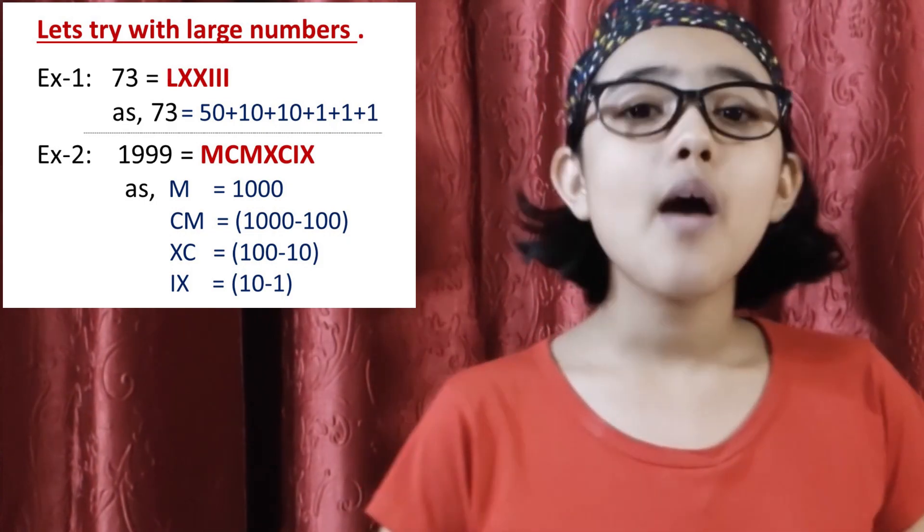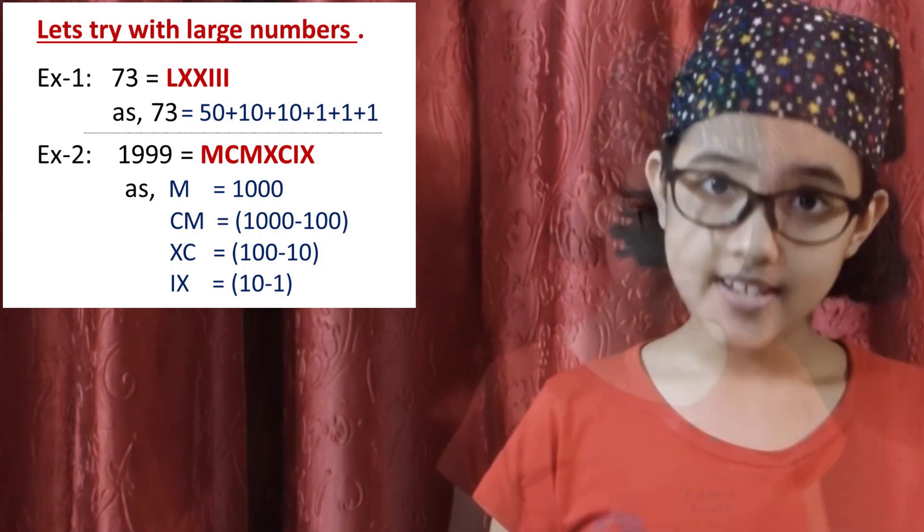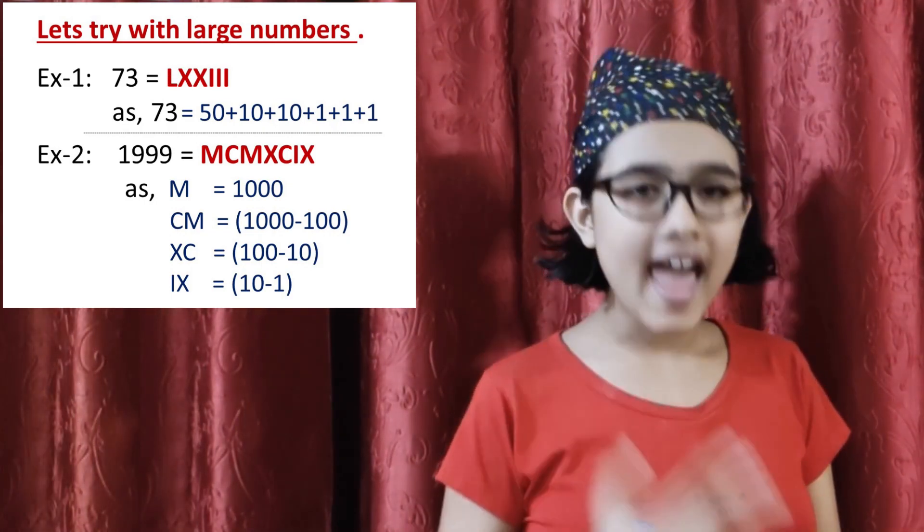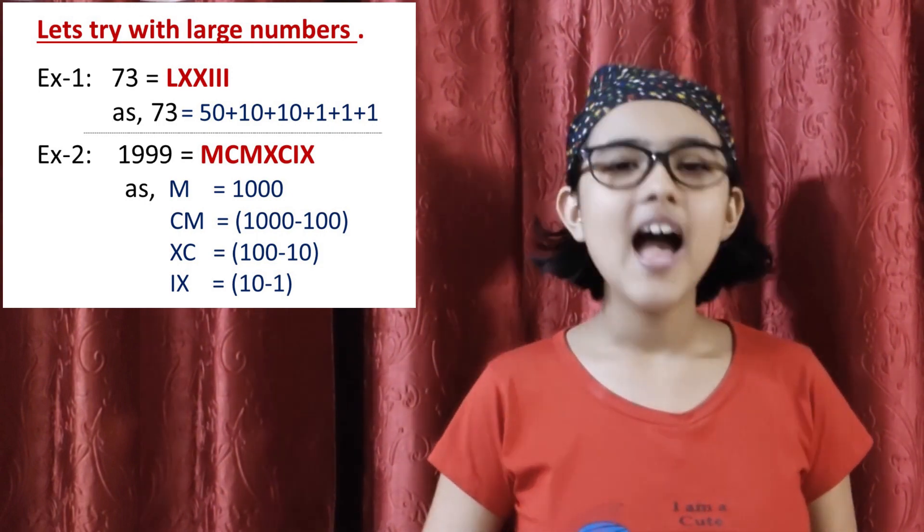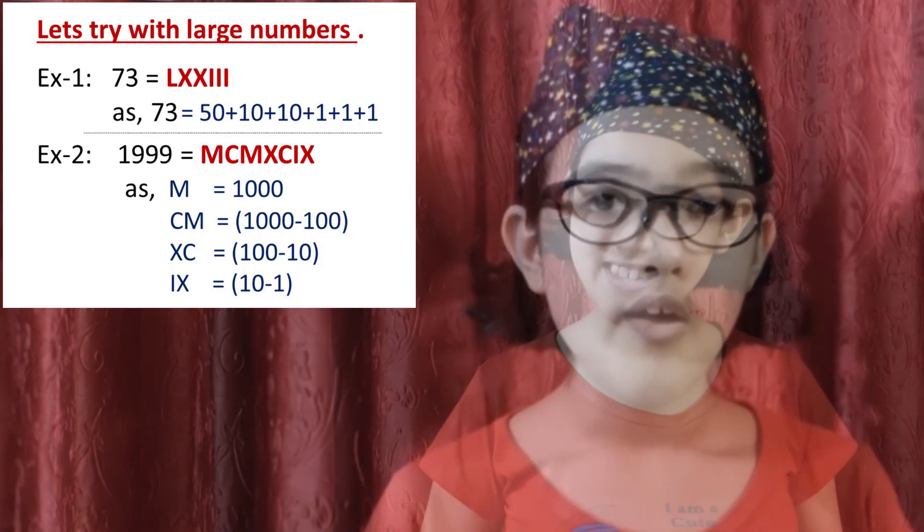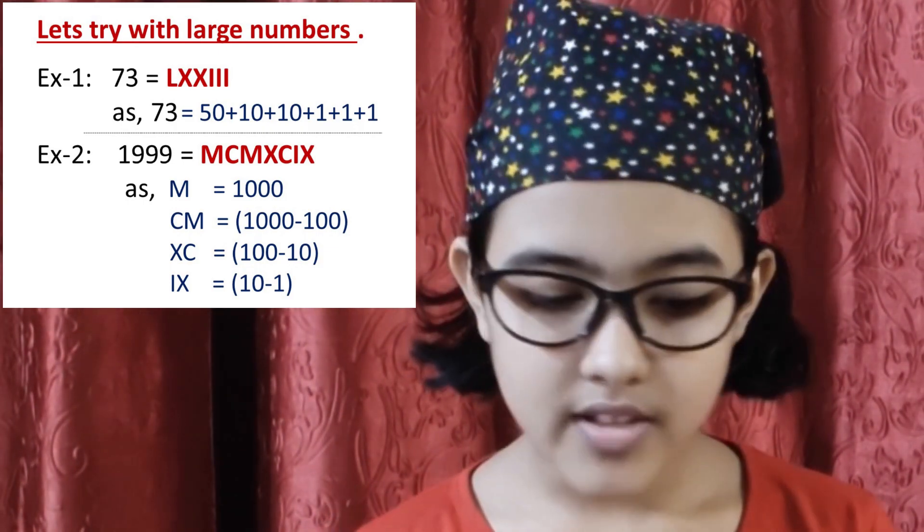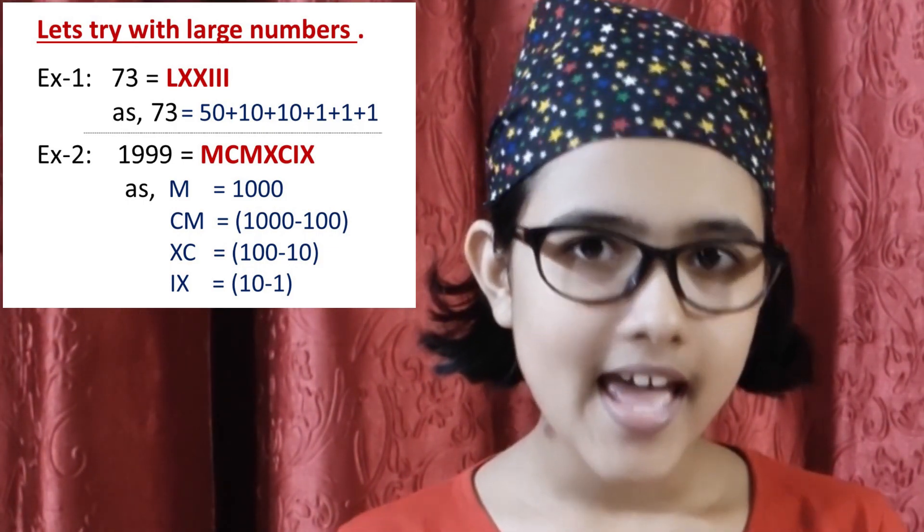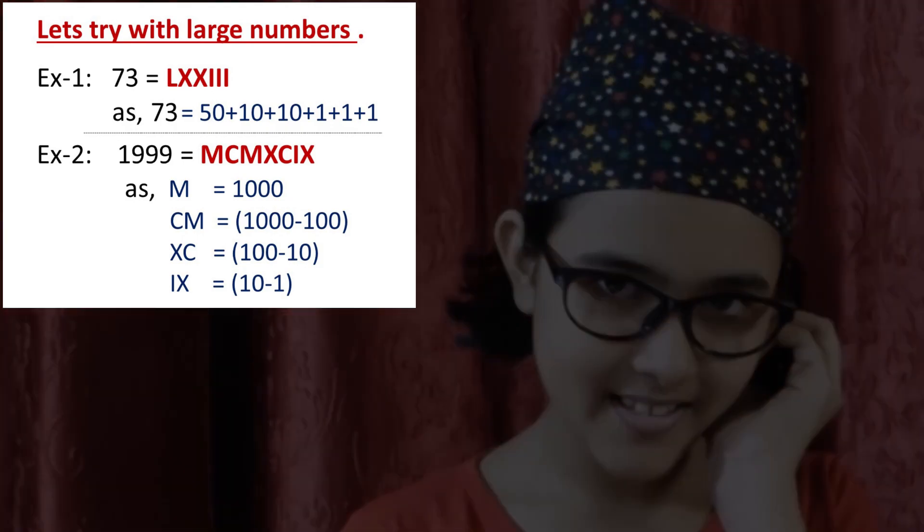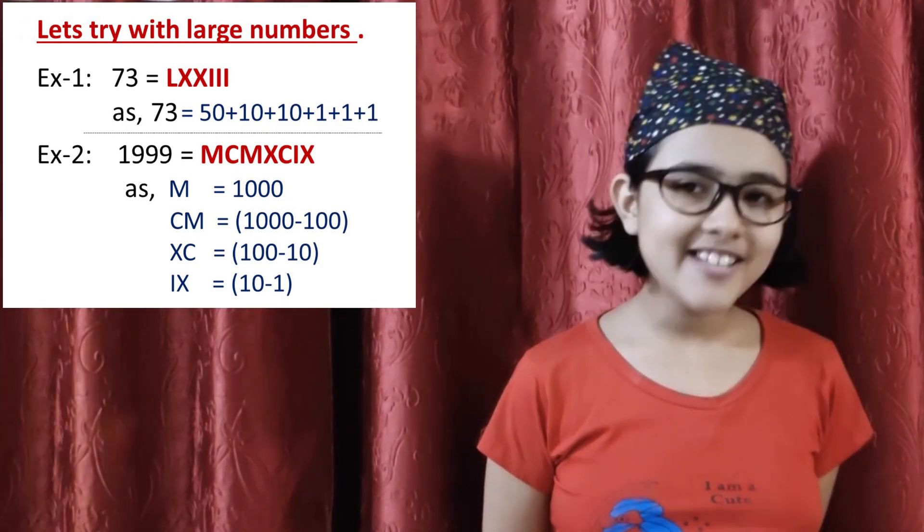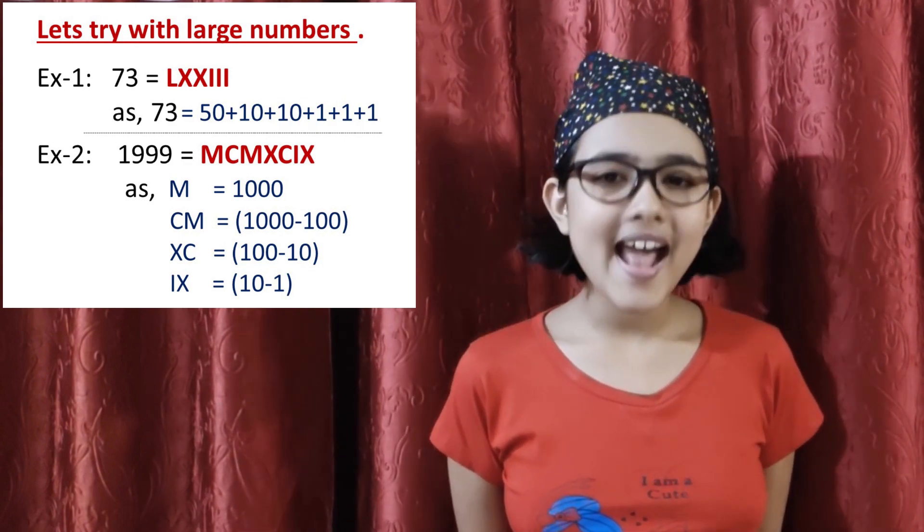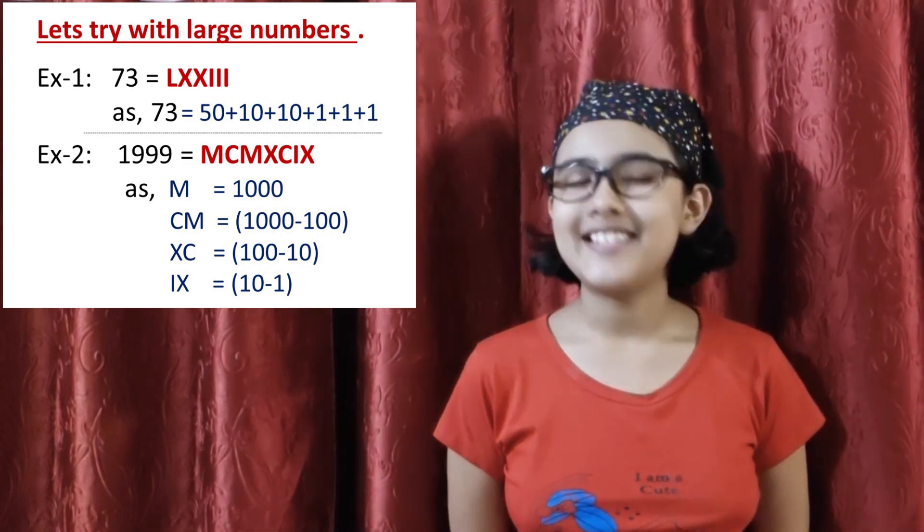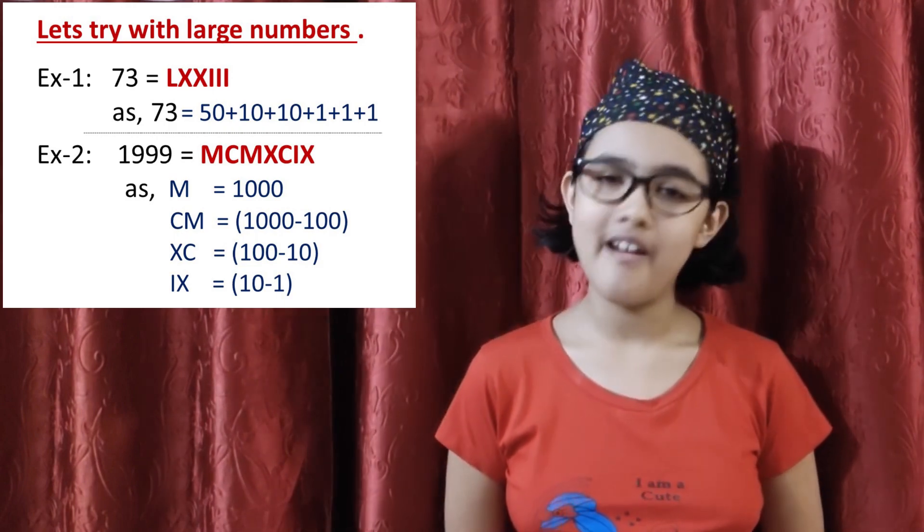Now we must add 9 with it. 9 is IX, so 999 is CMXCIX. But don't forget, we haven't yet added the 1,000. So our final answer is MCMXCIX. It's really simple. Don't worry.